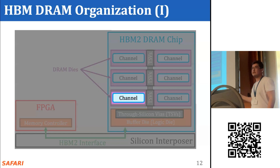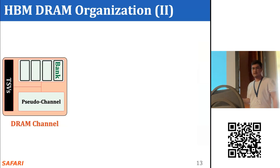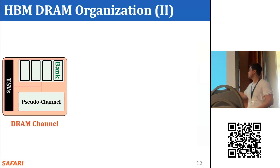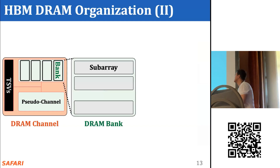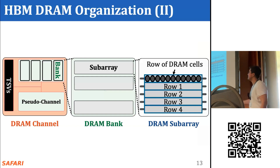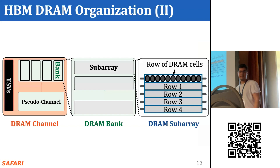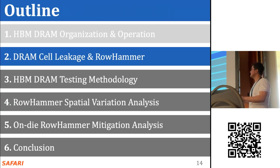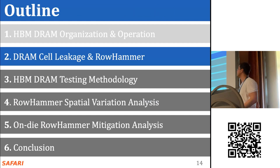An HBM DRAM channel contains multiple pseudo-channels, and in each pseudo-channel we have multiple banks. A bank contains sub-arrays, and a sub-array contains many DRAM rows. Finally, we have many DRAM cells — storage cells — and a DRAM sense amplifier. Now let's look at the cell in more detail, its leakage characteristics, and the RowHammer phenomenon.